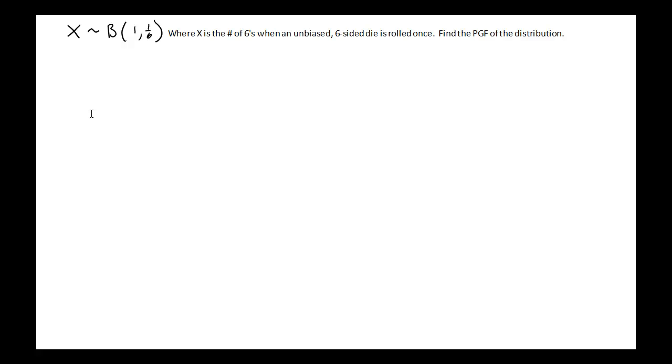The first one we're going to look at is this one right here, which is a Bernoulli. We know it's Bernoulli because it says where x is the number of sixes when an unbiased six-sided die is rolled once. This could very easily be made into a binomial expansion, but because it's only being rolled once, we can treat it as Bernoulli.